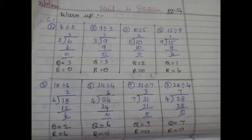We say the 2 times table up to 6: 2 ones are 2, 2 twos are 4, 2 threes are 6. So 3 times 2 gives us 6. 2 threes are 6; 6 minus 6 is 0. The quotient is 3 and the remainder is 0.